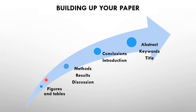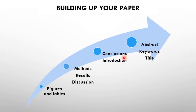After preparing figures and tables, write a caption for each one. Then start writing the methods section — everything you followed in your experimental work or simulation. Next, describe the figures and tables in the results section, then write the discussion as an interpretation of your results. After that, write the conclusions, and then the introduction. As you can see, the introduction comes after methods, results, discussion, and conclusions.